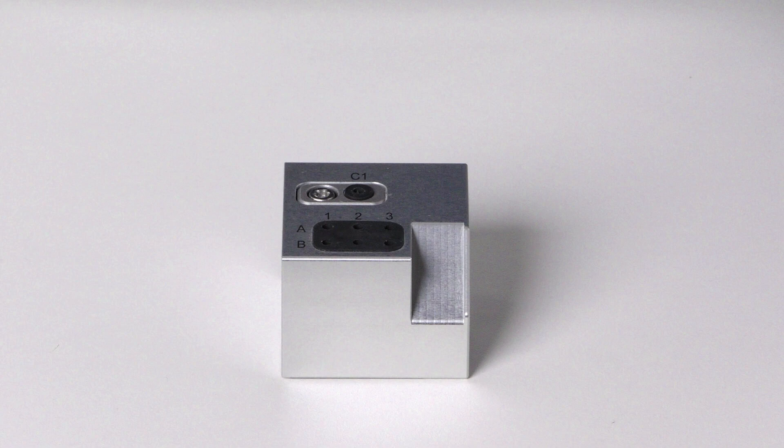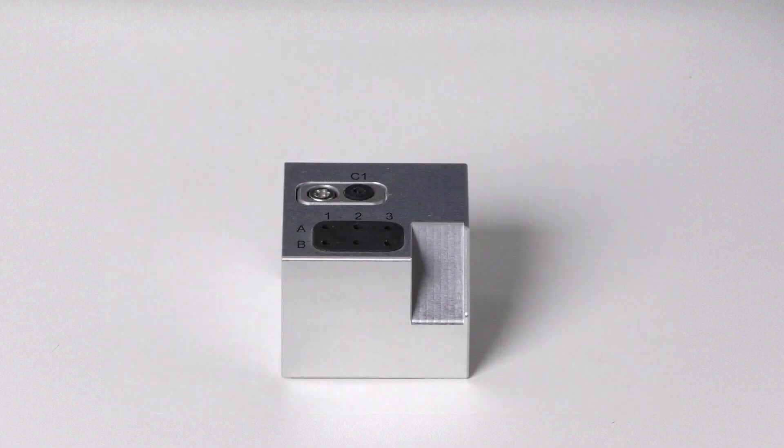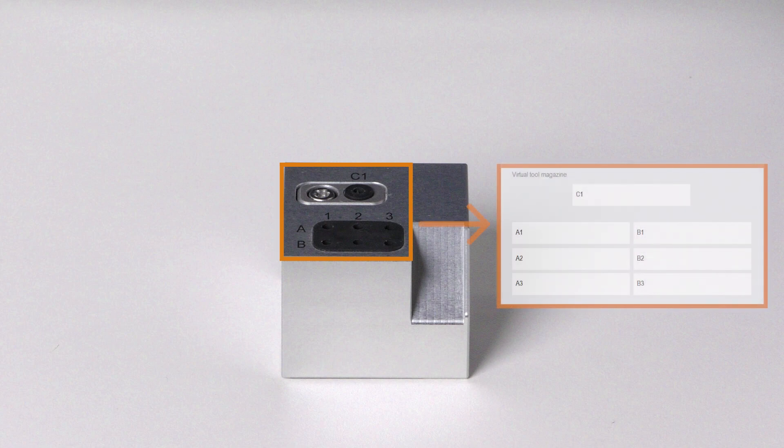Always remove worn or damaged tools from the tool magazine. Dental CNC shows the remaining tool life in the tool administration view. Also make sure that the positions of the tools in the tool magazine correspond to the positions in Dental CNC.